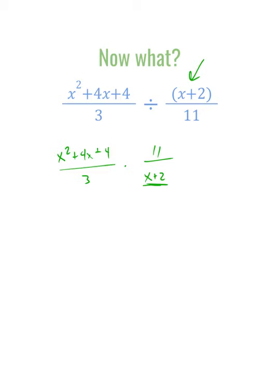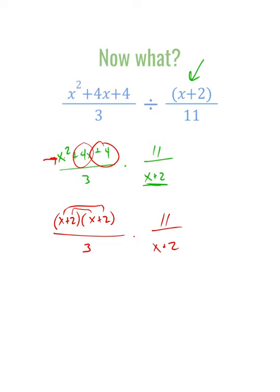Just like with multiplication, we're going to see if we can factor that first numerator — is there an x plus 2 in there? It is x plus 2 times x plus 2, because 2 times 2 is 4, and 2x plus 2x when you FOIL is 4x for the middle term. When we multiply again by x plus 2, we see x plus 2 in our numerator and x plus 2 in our denominator, which leaves an x plus 2 still in the numerator, along with 11 and 3.